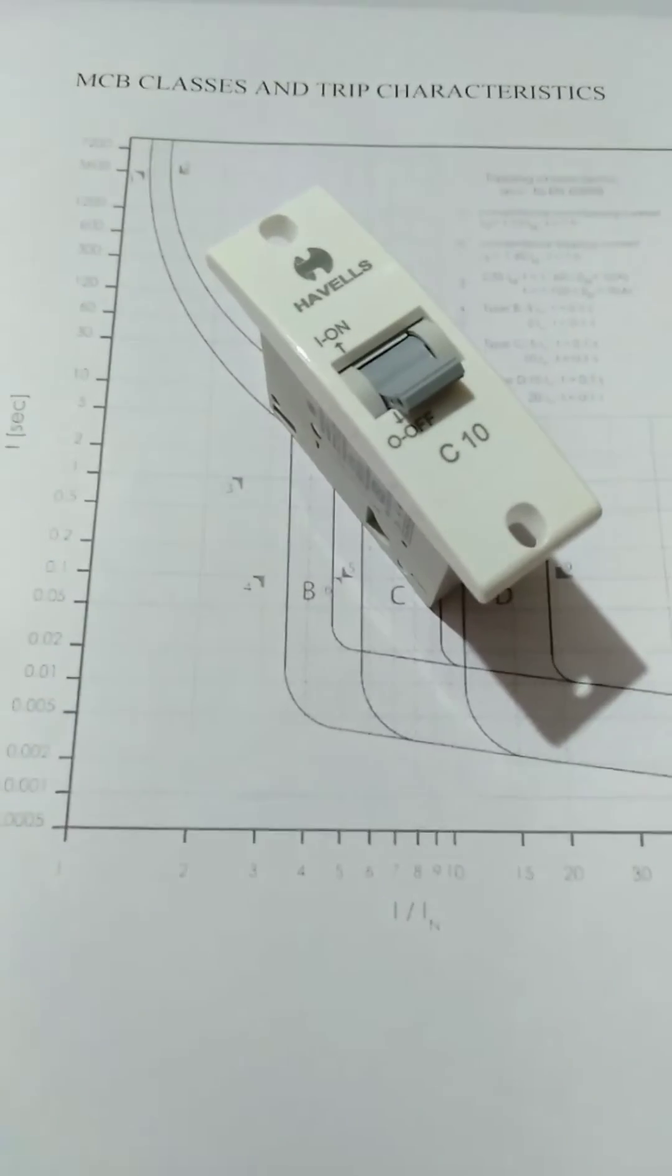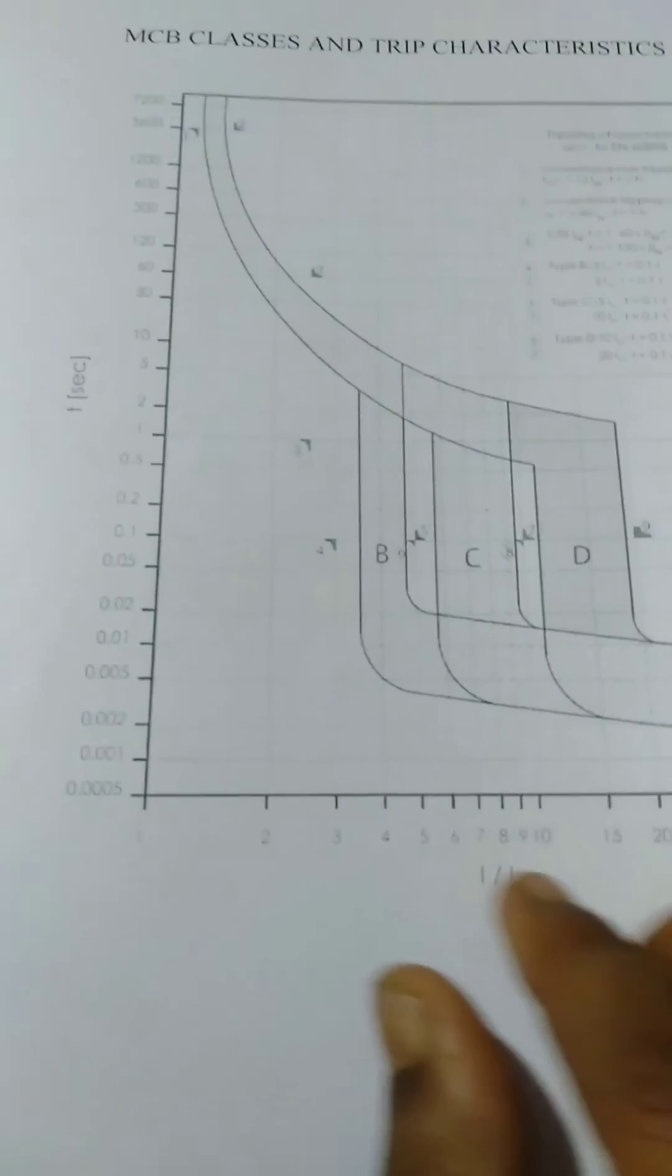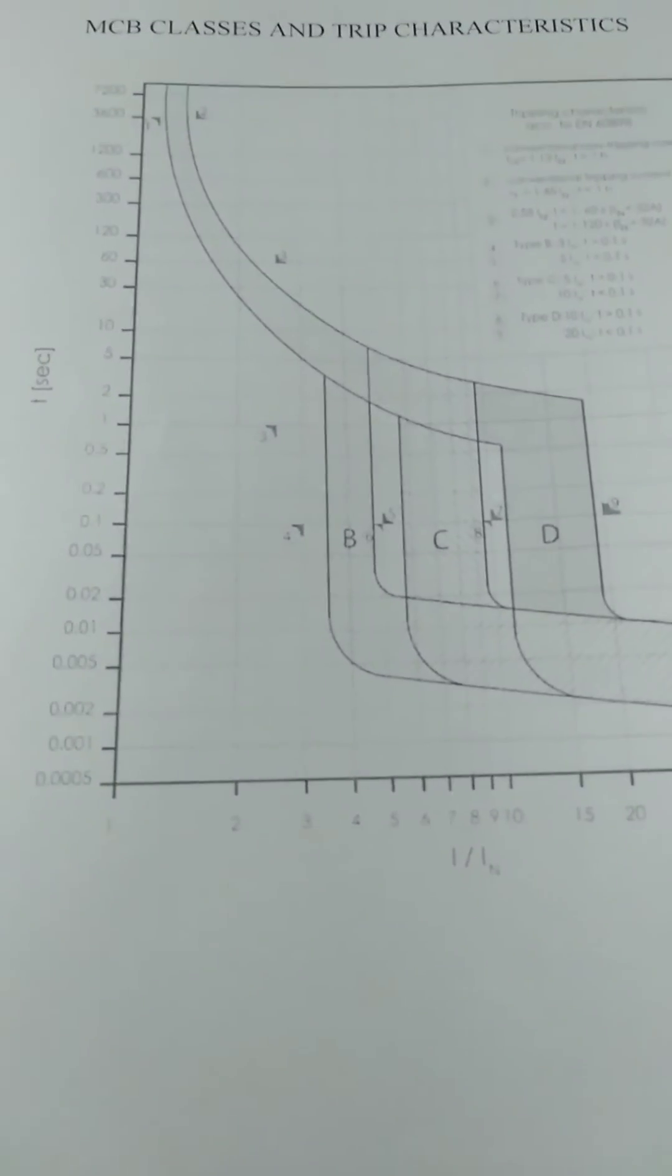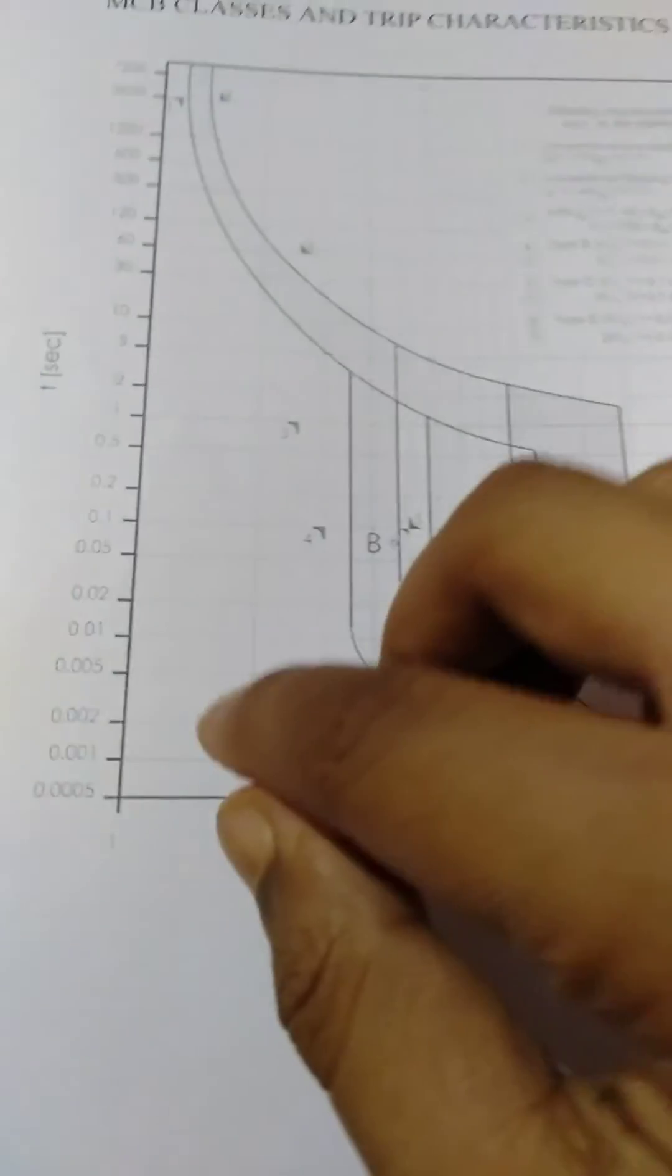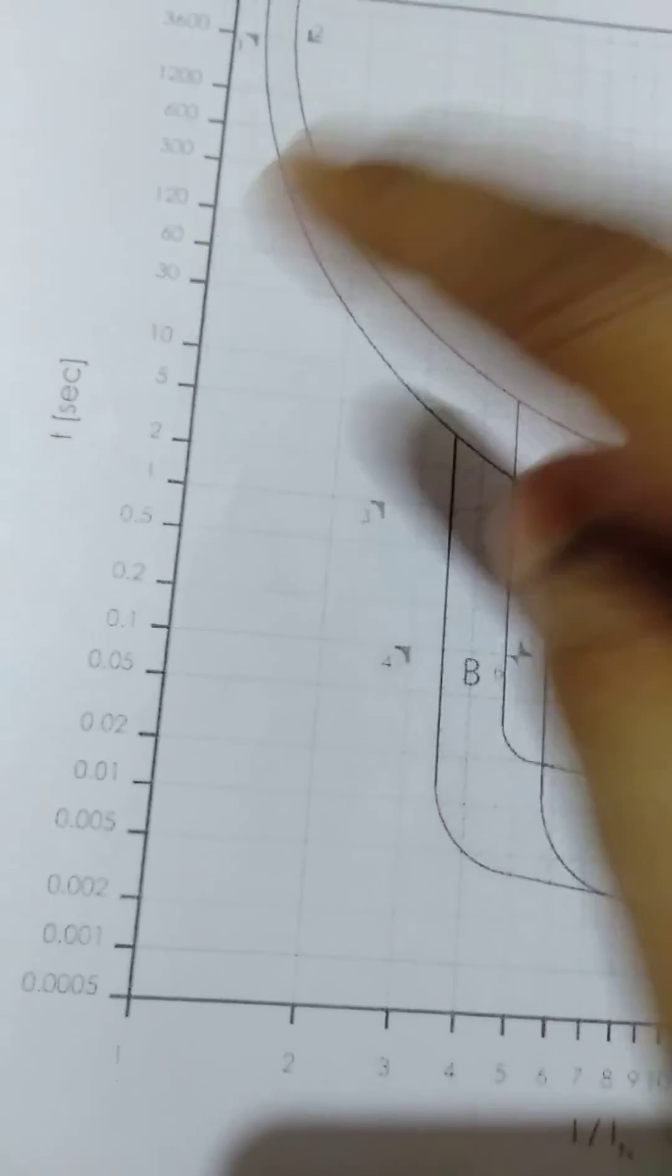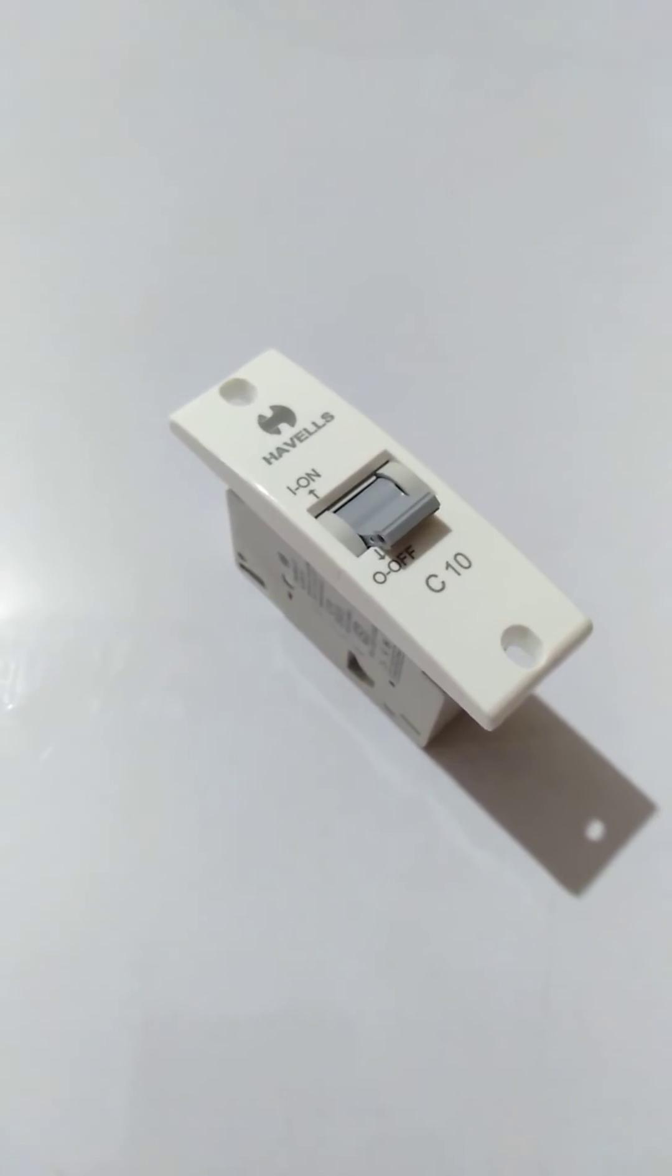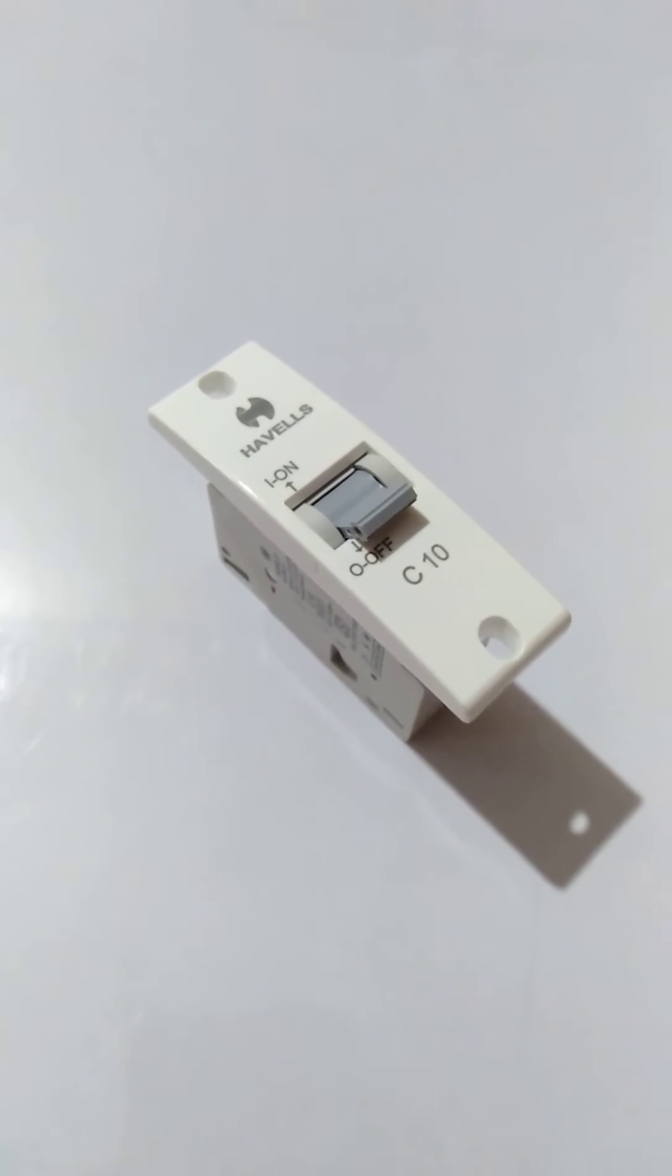For a C class MCB, the graph shows its confirmed trip zone to be around 5 to 10 times the nominal current. For a fault current running twice the nominal current, the trip time is around 30 seconds. Such MCBs are viable only for inductive loads that draw a great deal of starting current.